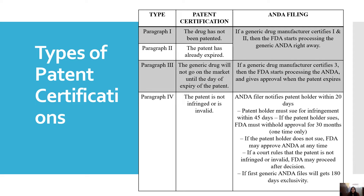Types of patent certification. There are four types of patent certification: paragraph 1, paragraph 2, paragraph 3, and paragraph 4. In paragraph 1, the drug has not been patented. In paragraph 2, the patent has already expired. In paragraph 3, the generic drug will not go on the market until the day of expiry of the patent. In paragraph 4, the patent is not infringed or the patent is invalid.